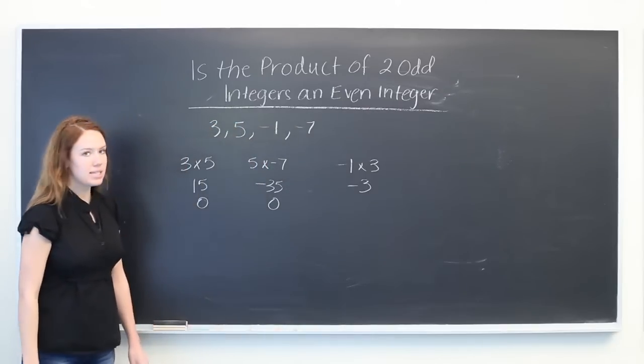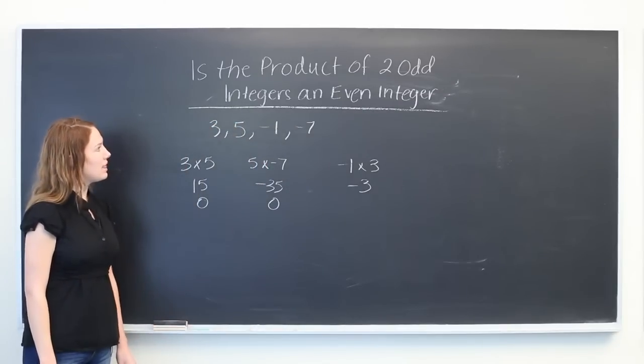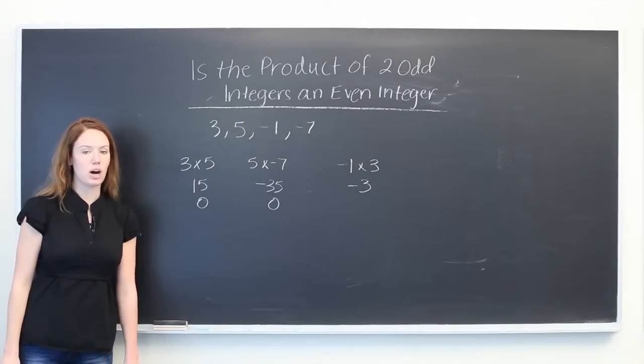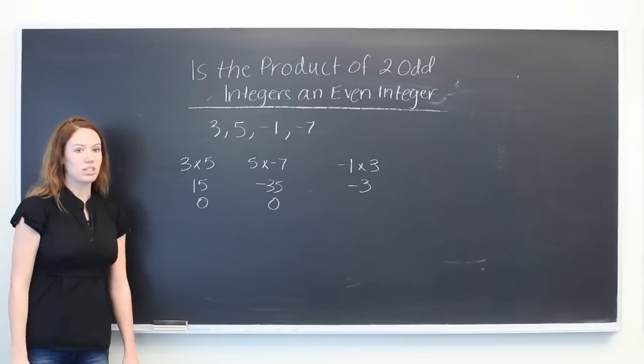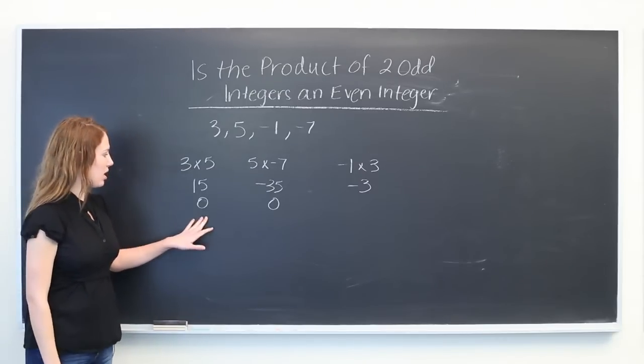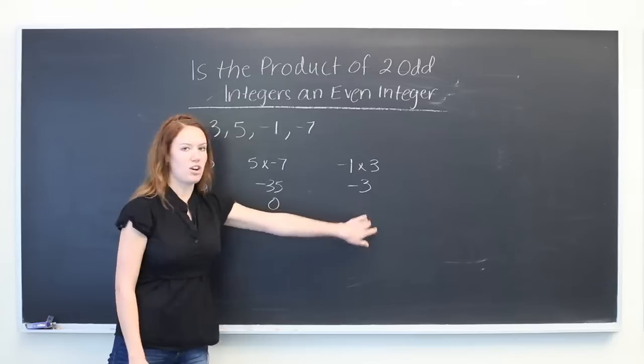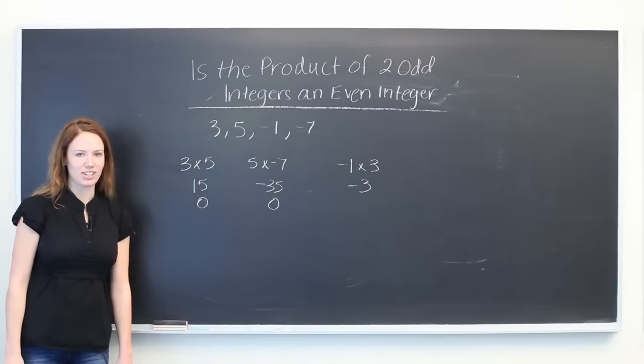So we see that the product of two odd integers is actually not even, but odd, as it is in all three of these cases. Thanks for watching.